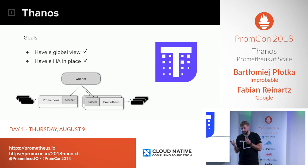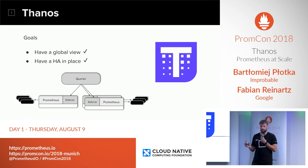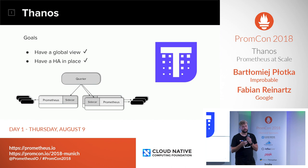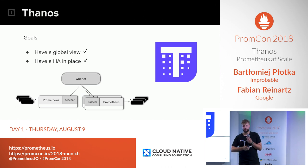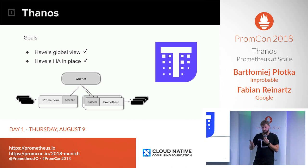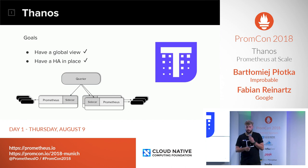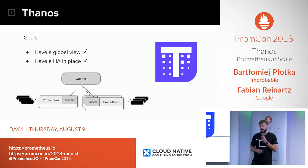Thanos sidecar and Thanos Query are just enough — these two components fulfill the first two goals: global view and availability. In fact, you can stop right there if that satisfies your requirements. If you just want these two goals, you can grab Thanos Query, point to multiple scrapers, specify which Prometheus is in which HA group, and you can have a global view and access everything from a single place.